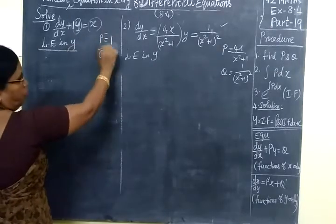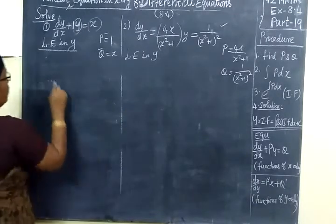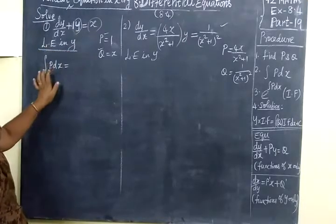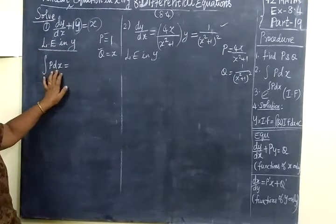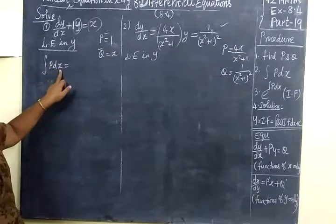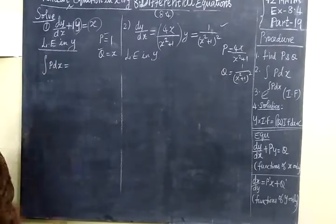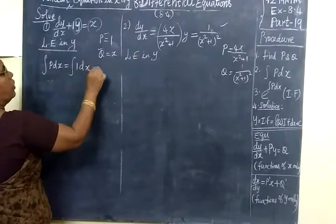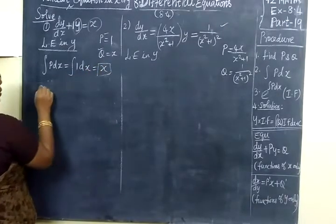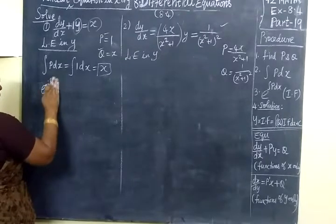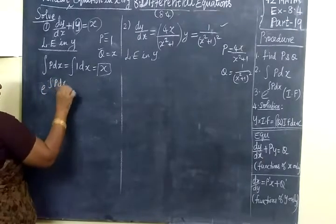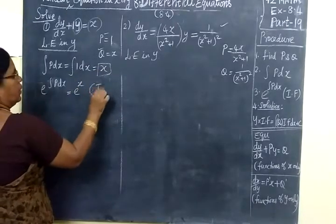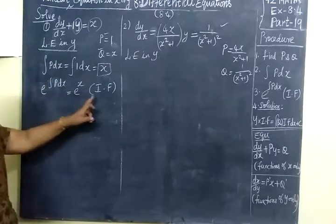Next we have to find integral P dS. For this linear equation in y, x corresponds to dS. So the integral of P, which is 1, with respect to S gives simply S. Then the integrating factor is e to the power of integral P dS, which equals e to the power S. This is the integrating factor.